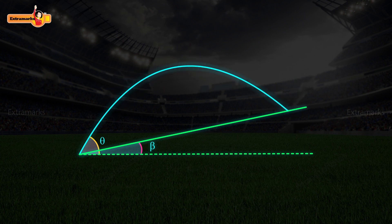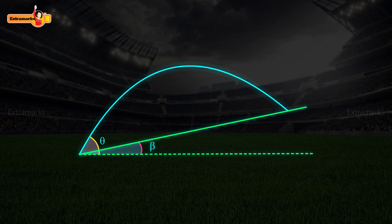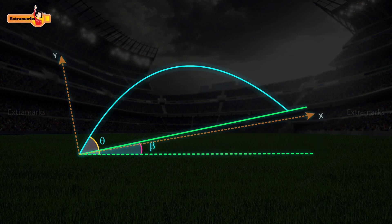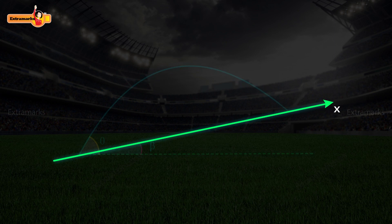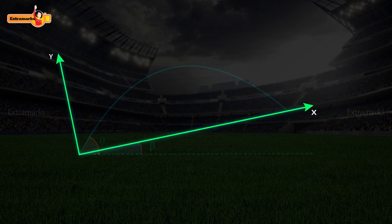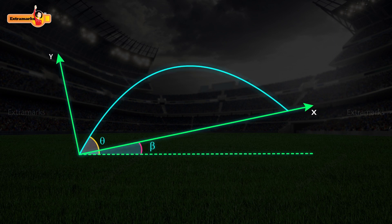When a projectile is projected on an inclined plane rather than on a horizontal plane, rotate the coordinate system in such a way that the x-axis lies along the inclined plane and the y-axis is perpendicular to the inclined plane.